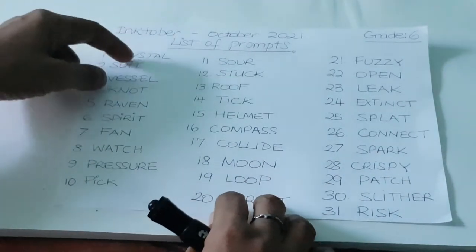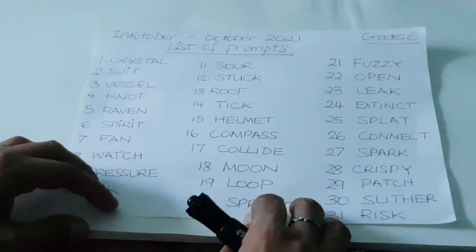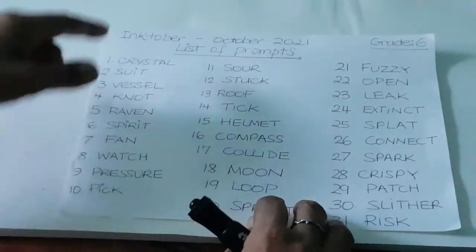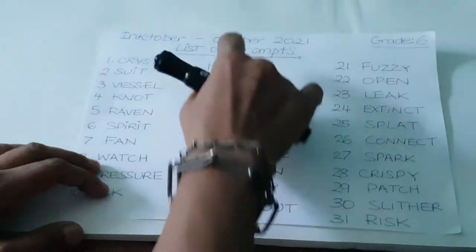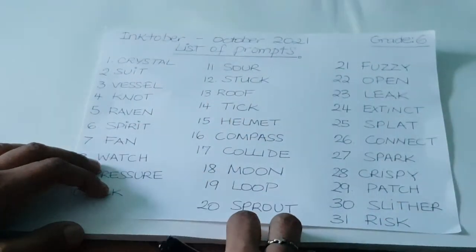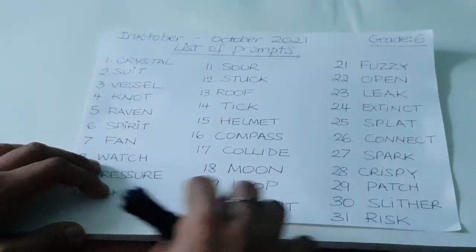These are prompts for you to draw different items in a little booklet. This is a project called Inktober and you have to do it during the month of October because we have 31 days in October.